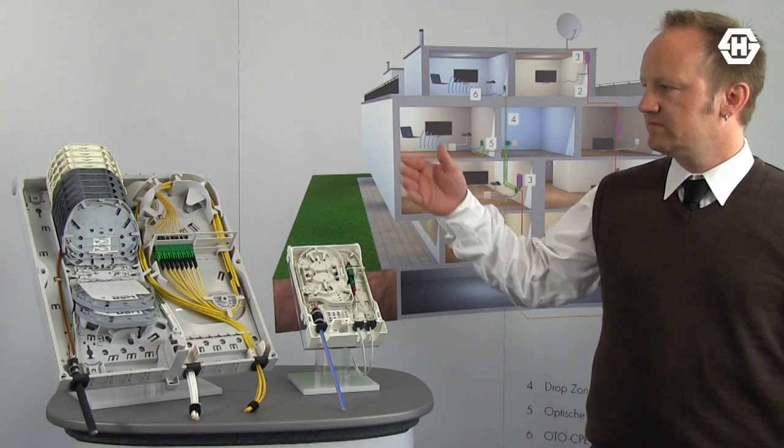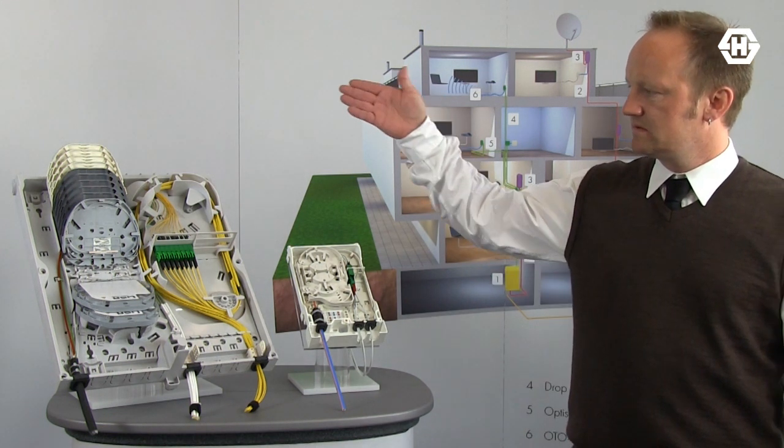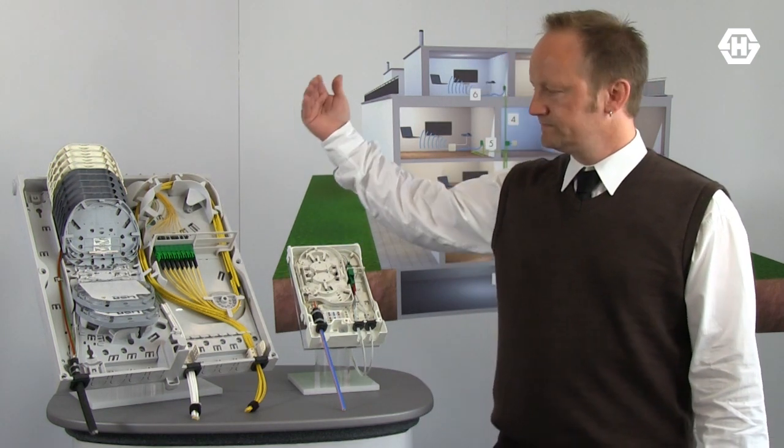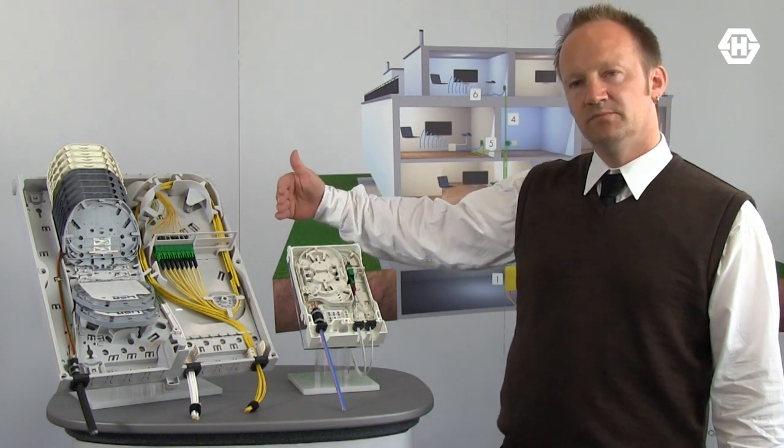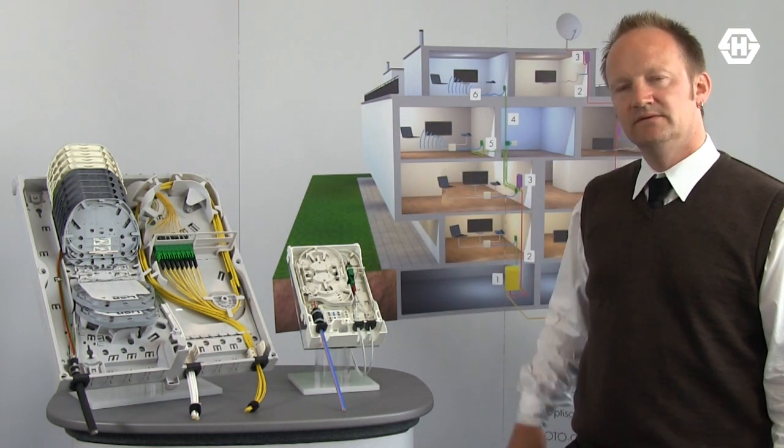OptiBoxes we have in four different dimensions. This type, the biggest type, OptiBox 32. In the middle we have OptiBox 16, OptiBox 6, and the smallest one, OptiBox 4.